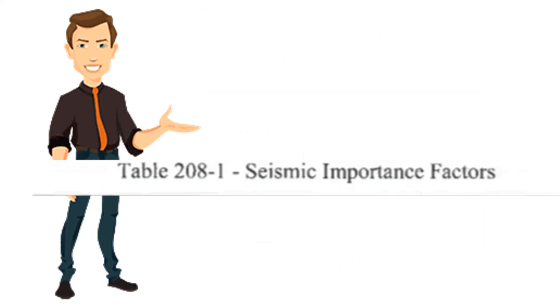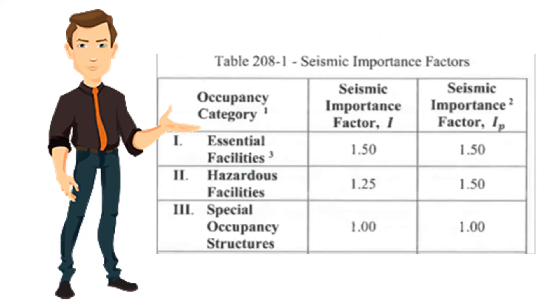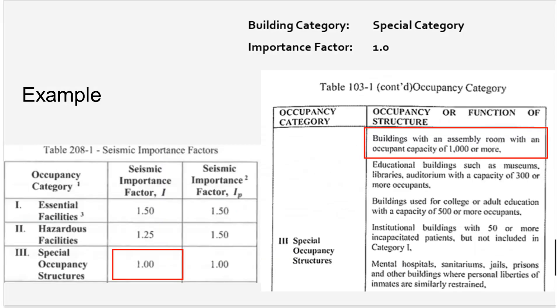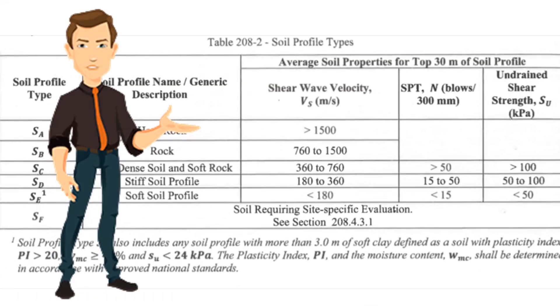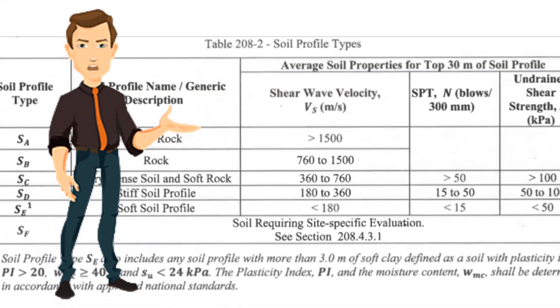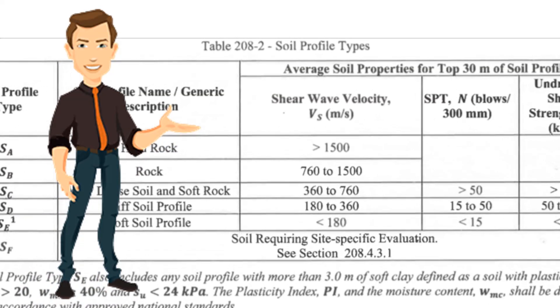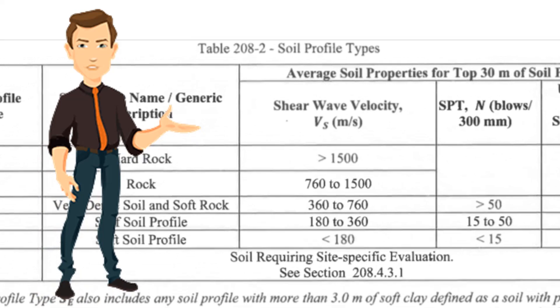Next, Table 208-1 covers the seismic importance factor. Your seismic importance factor depends on your occupancy category.